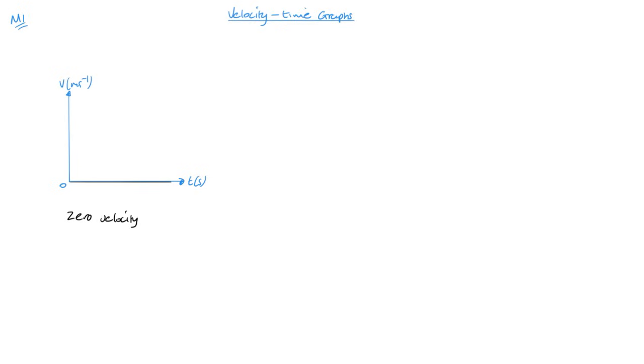Okay, means it isn't moving. Now equally, if I had any horizontal line, that would be a constant velocity.